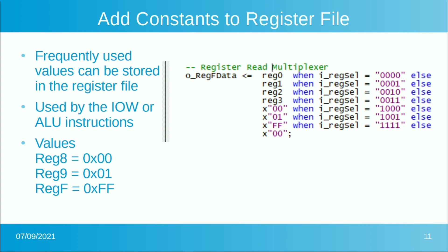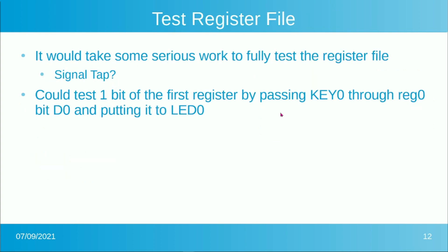Having these constant registers is a useful function. Note that these registers can't be written to — they're read-only. If you try to write to register 8, it will always return 0. Let's test the register file. We can easily test it by passing a bit into register 0, passing the key press in, and seeing it come out. We'll grab the output of that register file and put it to the LED — actually moving our key and LED through the register file, simulating what the IO instructions will do.